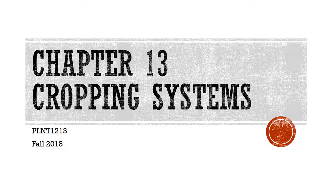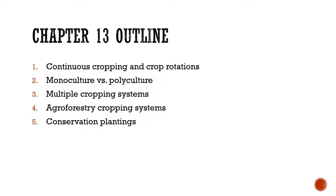Welcome to chapter 13. This chapter we're going to talk about cropping systems. Here are five different main points that we're going to look at: continuous cropping versus crop rotation, the difference between monoculture versus polyculture, multiple cropping systems such as a corn-soybean rotation, an oat rotation, agroforestry cropping systems, and conservation planting as well.